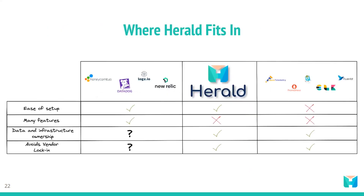That's where Herald comes in — Herald bridges the gap between commercial and open source solutions. It is an open source observability solution that abstracts away the complexity of setting up open source tools while offering development teams the ability to maintain data and infrastructure ownership. The only cost of using Herald is the cost of provisioning and using the AWS resources on which it is deployed. Herald was built for growing applications that have reached a size where the ability to monitor their health and performance has become an issue requiring a comprehensive observability solution.